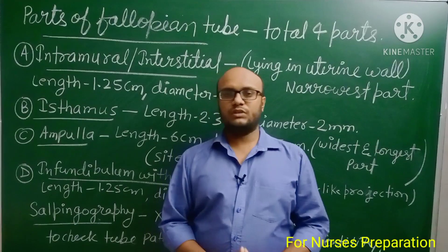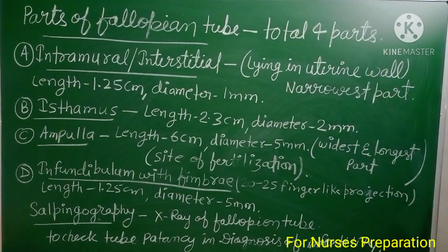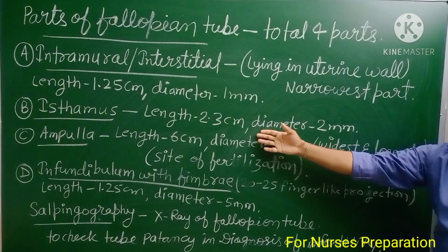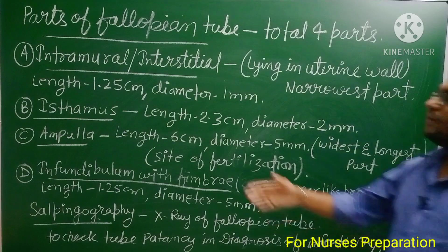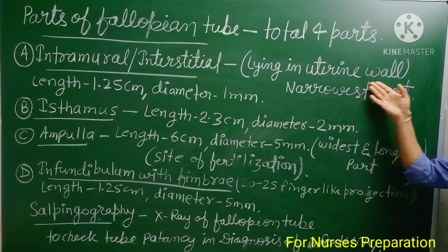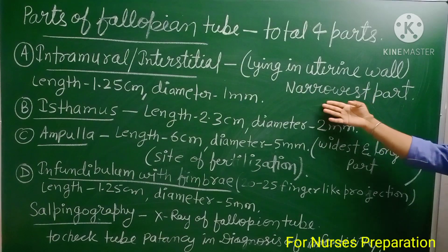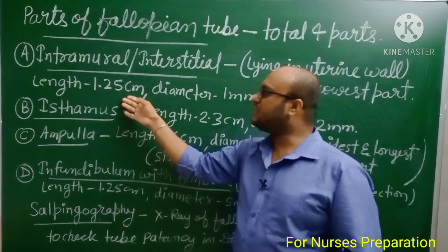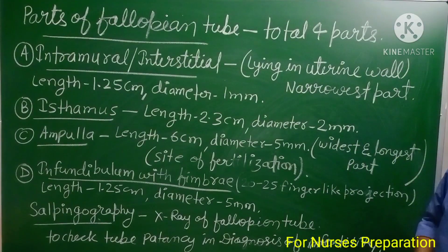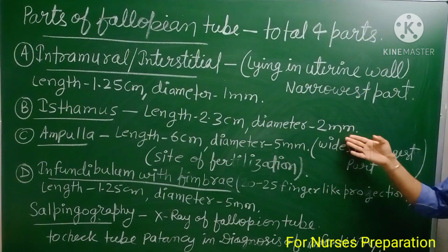For study purposes, the fallopian tube can be classified into four parts: first, the intramural or interstitial part; second, the isthmus; third, the ampulla; and fourth, the infundibulum. The intramural or interstitial part lies in the uterine wall, near the uterus. It is the narrowest part, with a length of 1.25 centimeters and diameter of 1 mm. The isthmus has a length of 2.3 centimeters and diameter of 2 mm.